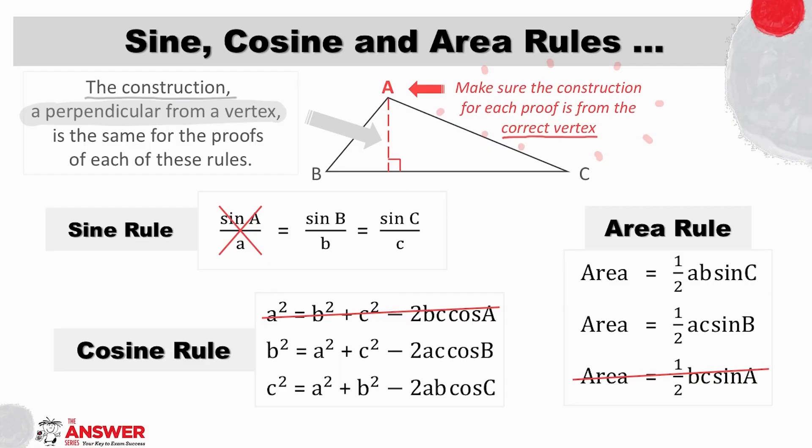So for example this construction a perpendicular from A that I've drawn in here will be correct for all of these versions of the rule but not for the versions of the rules containing A that I have crossed out. Remember to spend time on the proofs of these rules which you can find in our study guides so that you know them with confidence.